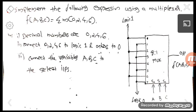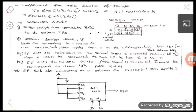The next problem type is: implement the logic function y = Σm(1, 3, 4, 6) using a 4-to-1 mux. The maximum minterm value is 6, which would normally require an 8-to-1 mux, but we are asked to use a 4-to-1 mux only. For a 4-to-1 mux there are 2 select inputs and 4 data inputs: d0 to d3.